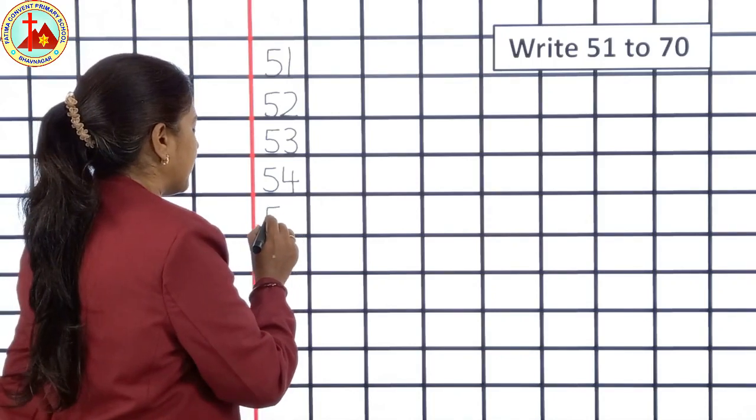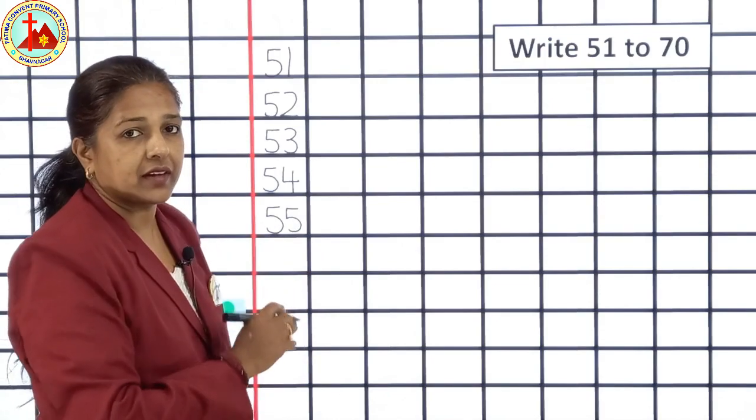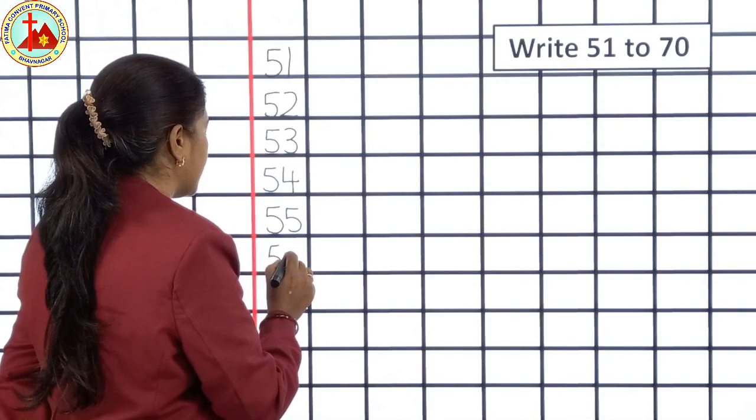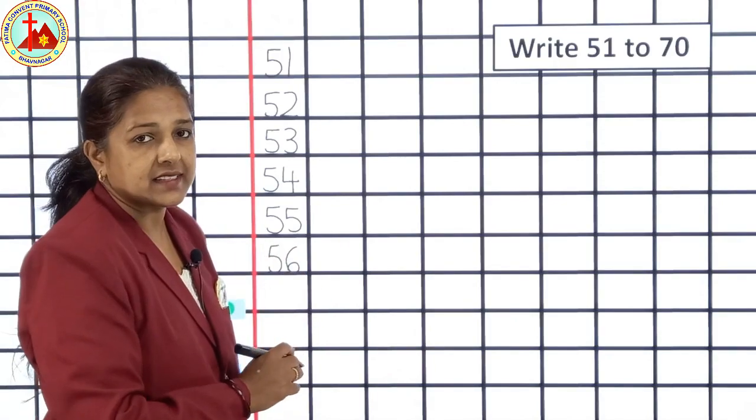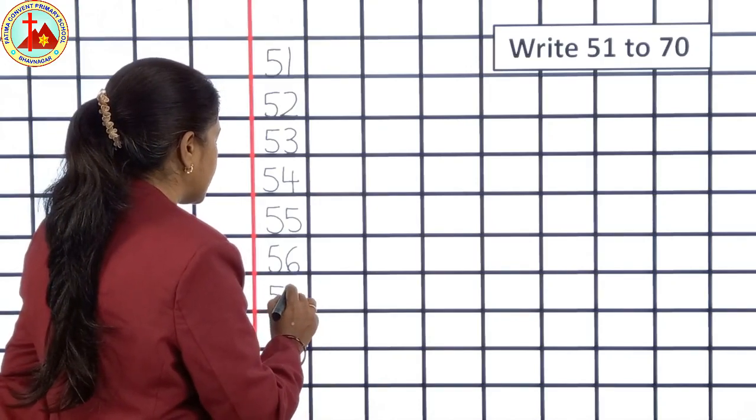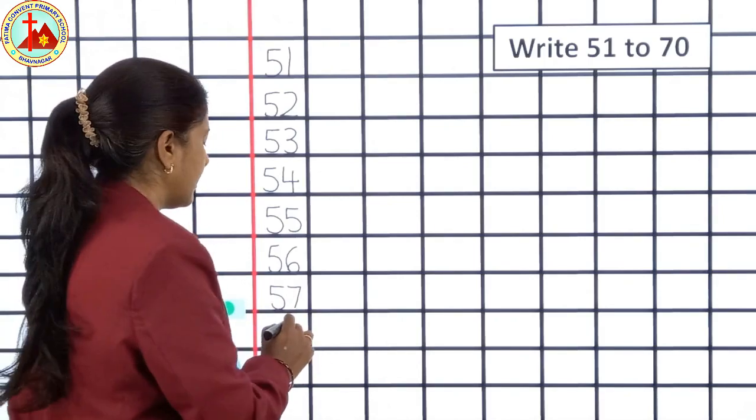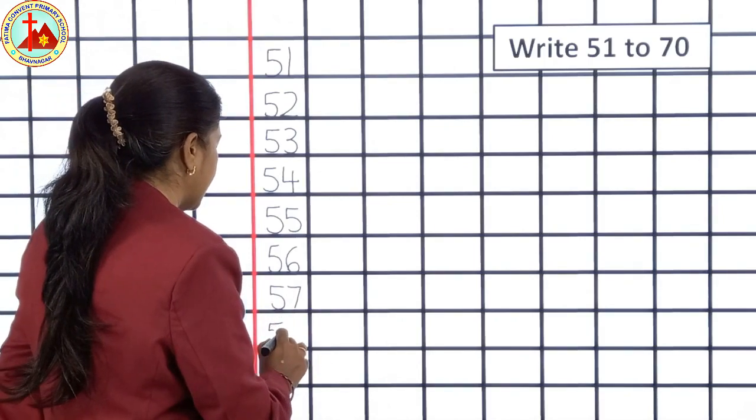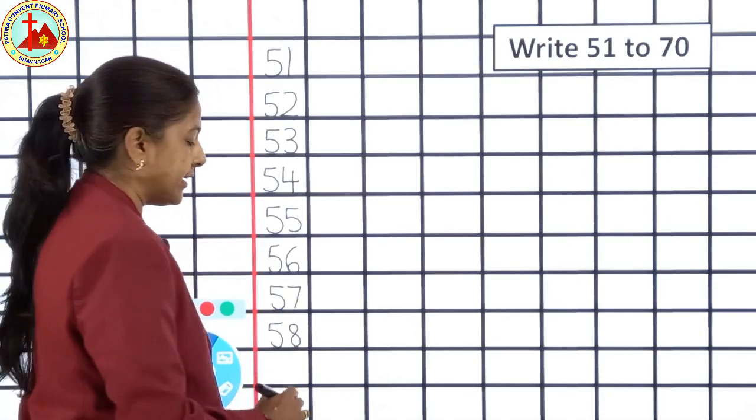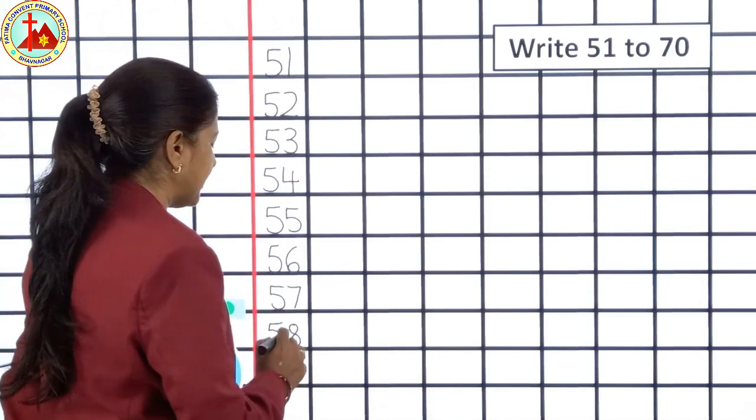After 54, 5, 5, 55. After 55, 5, 6, 56. After 56, 5, 7, 57. After 57, 58. After 58, 5, 9, 59.